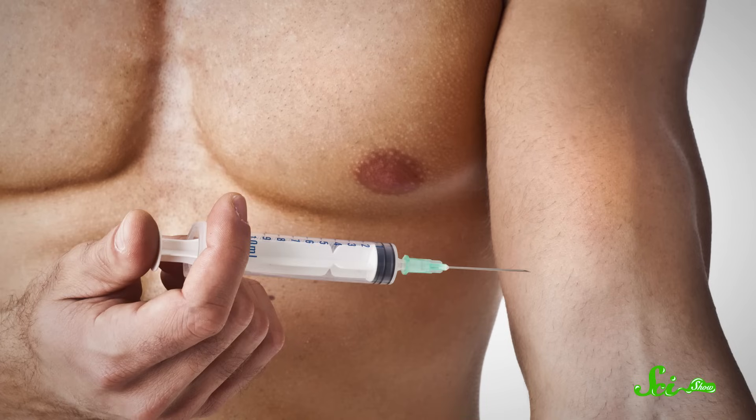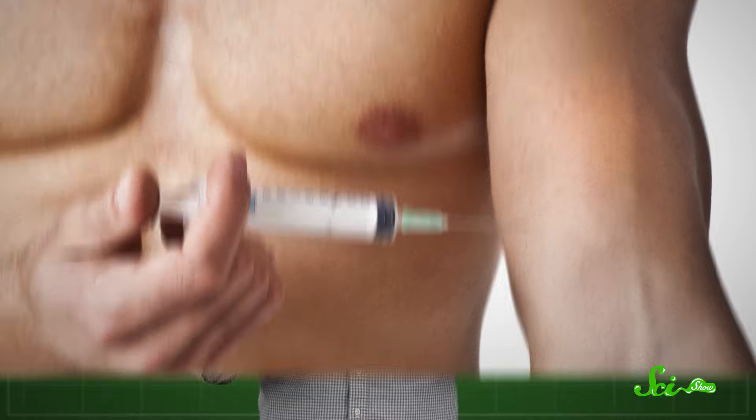So if scientists can figure out how to stick that stuff into a pill or a syringe, they'd theoretically be able to kick your brown fat cell production into overdrive, which would mean lots of fat being burned without you needing to do a thing. But since they've only just figured out that irisin in humans exists, that's a long way off.